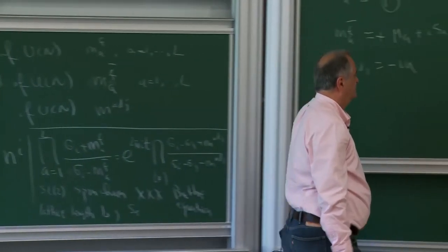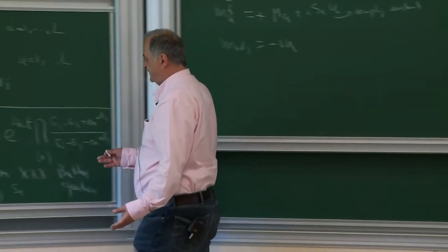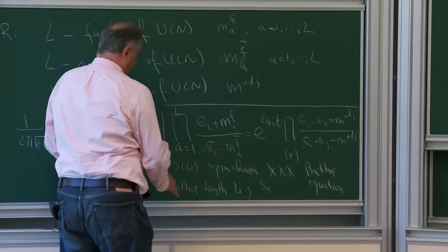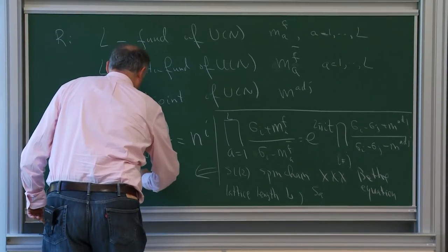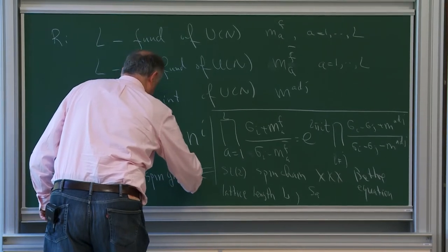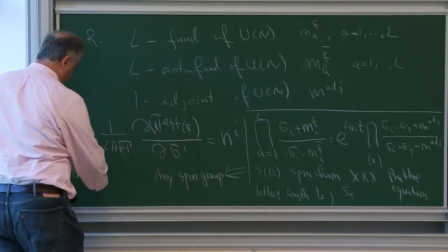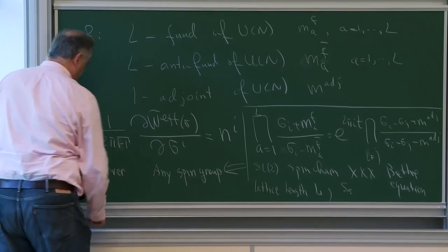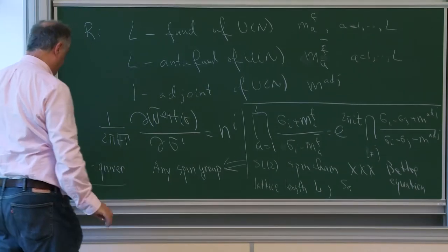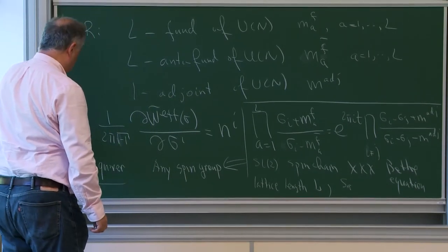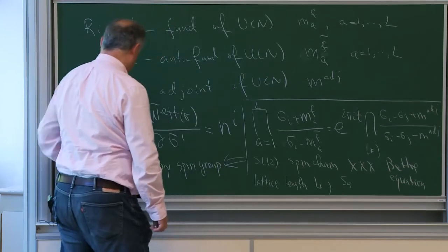The conjecture that we made with Nekrasov was that in principle, if you would have not SL — this is a case of SL(2), but of course this can be done for any spin group. And if it is ADE Dynkin diagrams you take, you have to take ADE quiver. And then ADE quiver gauge theory — instead of SL(2), you would get this group spin chain. This is doable for all of them.